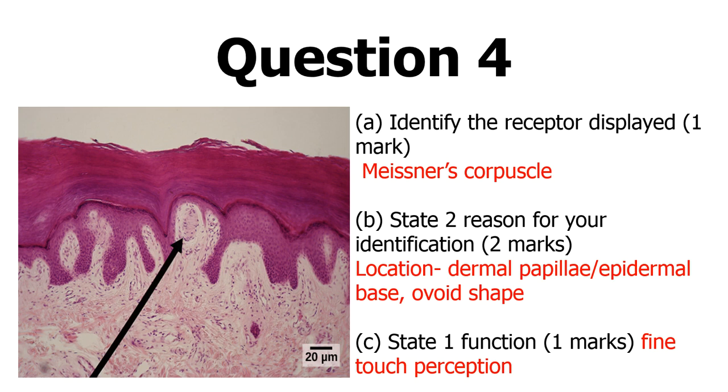So this is the epidermis and this is the dermis. These are what we call the epidermal pegs and then these are the dermal papillae. So at the dermal papillae, the junction between the epidermis and the dermis, this area here, this is where you usually find the Meissner's corpuscles.